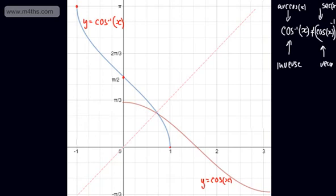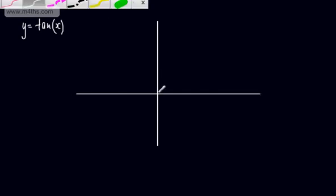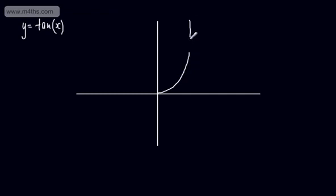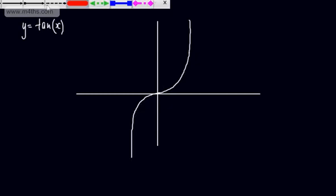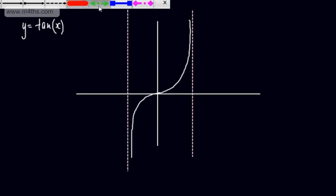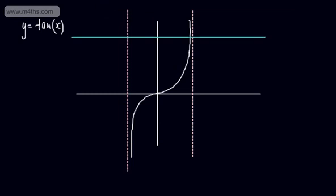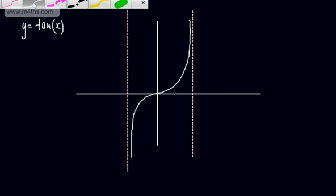Let's move on now to tan x. We write y equals tan x and draw a quick sketch. We want to make this 1 to 1 so the inverse will exist. We can see that in a particular interval around the y-axis, we've got a 1 to 1 function. A horizontal line will only cross it in one place. So we can restrict the domain.